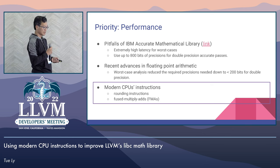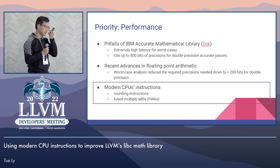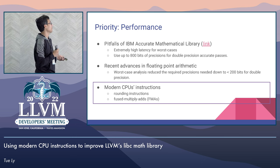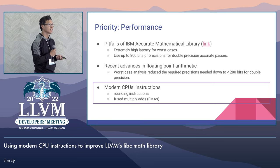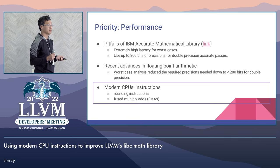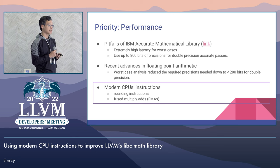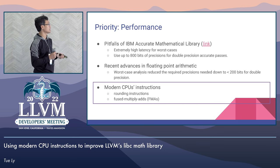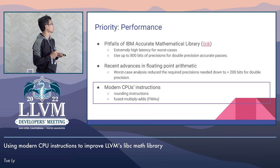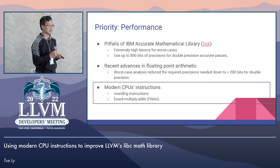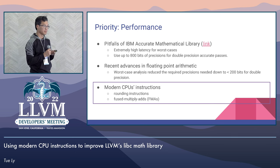Our second priority is performance. We want to avoid the pitfalls of the IBM accurate math library, which was the first to attempt correctly rounded functions for double precision. The problem with the IBM accurate math library is that they have a very long tail of latency — when the fast path fails, they fall back to 800 bits of precision, making the worst-case latency thousands of times the average. More recent advances analyze worst-case scenarios; in most functions, the extra precision needed can be a lot smaller, like 40 or 10 bits. Using that, together with modern CPU instructions, we can make math functions both accurate and performant.